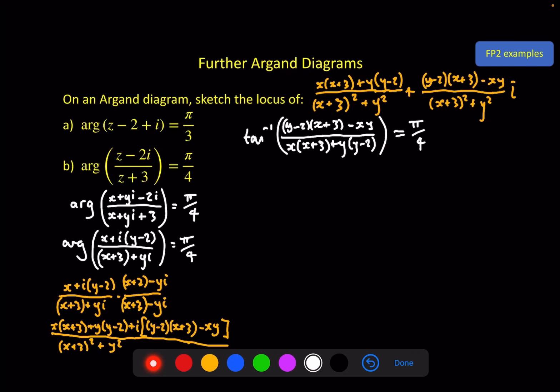And that has to equal pi by 4. Now we bring the tan on the other side, and tan of pi by 4 is just 1. So this has to equal 1. And if this equals 1, then I can take the denominator on the other side. The numerator must equal the denominator. So doing all of that in one go, we get this.